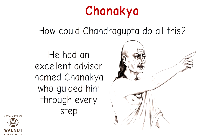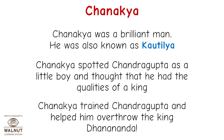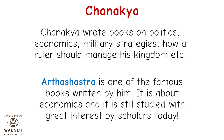How could Chandragupta do all this? He had an excellent advisor named Chanakya who guided him through every step. Chanakya was a brilliant man, also known as Kautilya. He spotted Chandragupta as a little boy and thought he had the qualities of a king. Chanakya trained Chandragupta and helped him overthrow king Dhanananda. He wrote books on politics, economics, military strategies, and how a ruler should manage his kingdom. Arthashastra is one of his famous books, about economics, and it is still studied with great interest by scholars today.